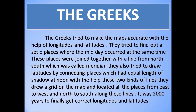The Greeks tried to make maps accurate with the help of longitudes and latitudes. They tried to find out a set of places where midday occurred at the same time. These places were joined together with a line from north to south, which was called a meridian. They also tried to draw latitudes by connecting places which had equal length of shadow at noon. With the help of these two kinds of lines, they drew a grid on the map and located all the places from east to west and north to south. It took two thousand years to finally get correct longitudes and latitudes.